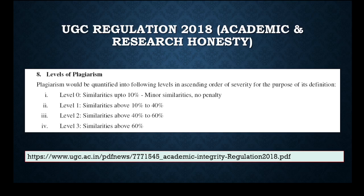As per the act, plagiarism would be quantified into the following levels in ascending order of severity. At level zero, if similarities are up to 10 percent, there is no penalty and it is considered minor similarities. I don't want to go to level one, two, or three because I have some objection at this point that I want to share with you all, and then you can decide if it should be part of it or not.